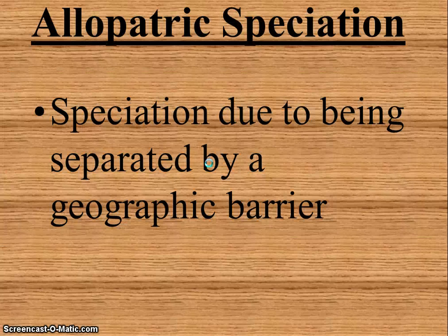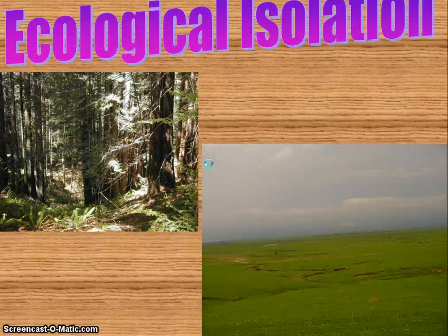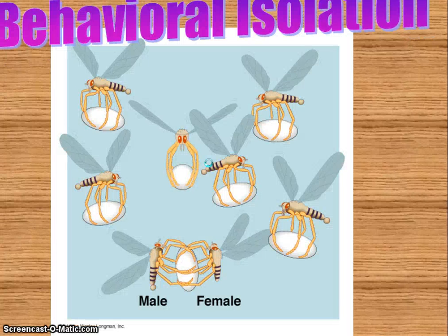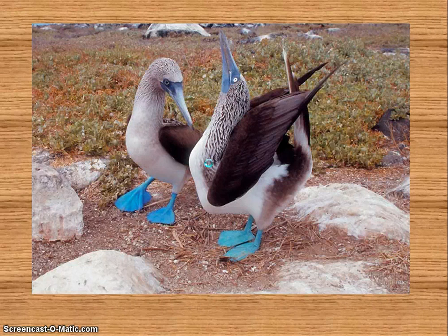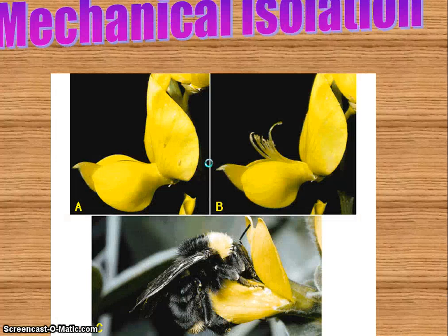When we have geographic isolation, we have what's called allopatric speciation — speciation due to being separated by a geographic barrier. Ecological isolation involves different species requiring different habitats, like freshwater fish versus saltwater fish. Behavioral isolation involves different mating behaviors and mating dances. Seasonal isolation involves different reproductive cycles, and mechanical isolation is when the reproductive parts don't match.